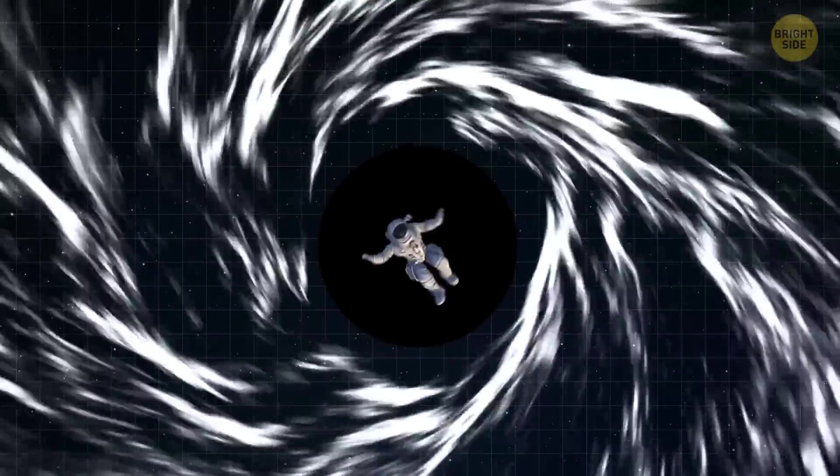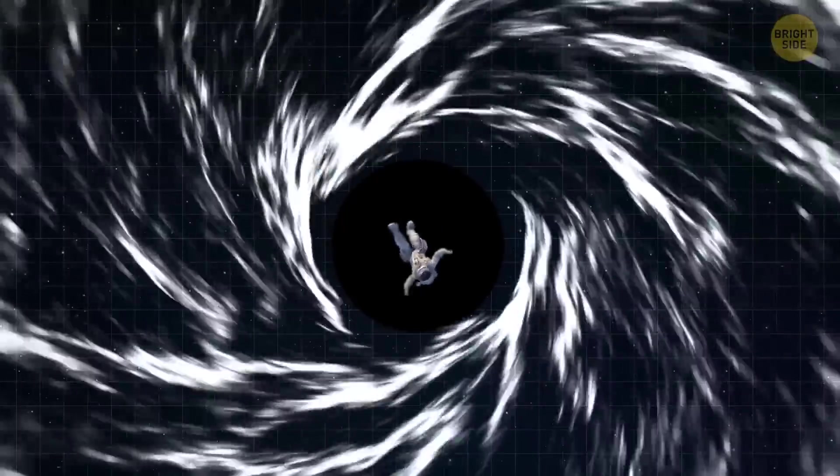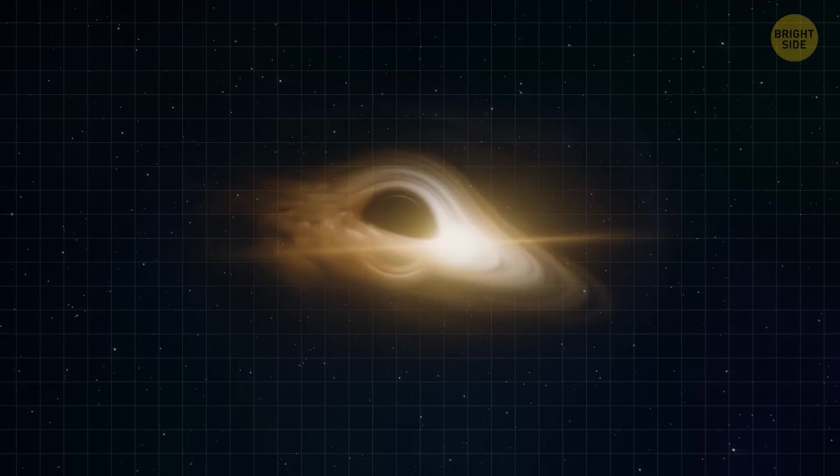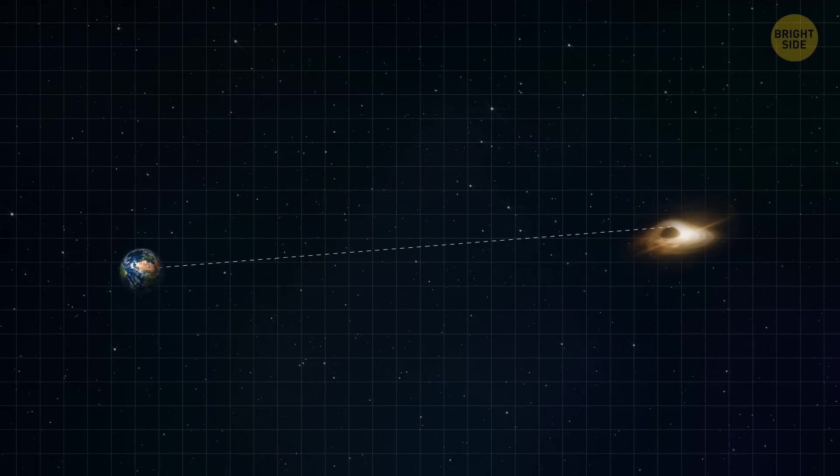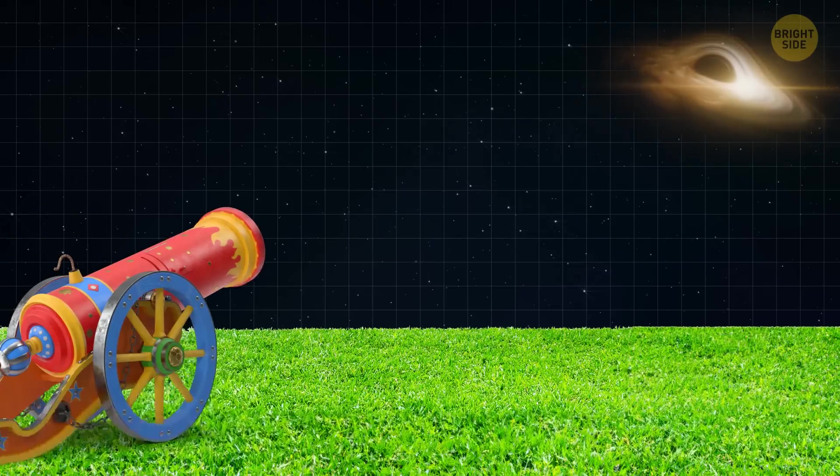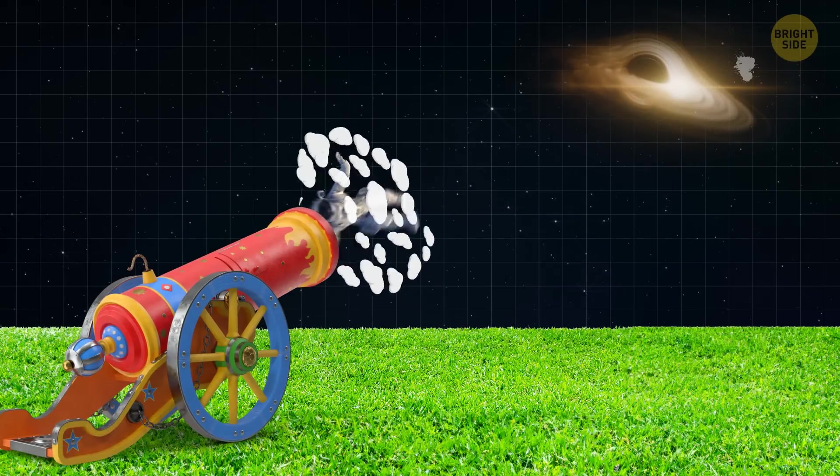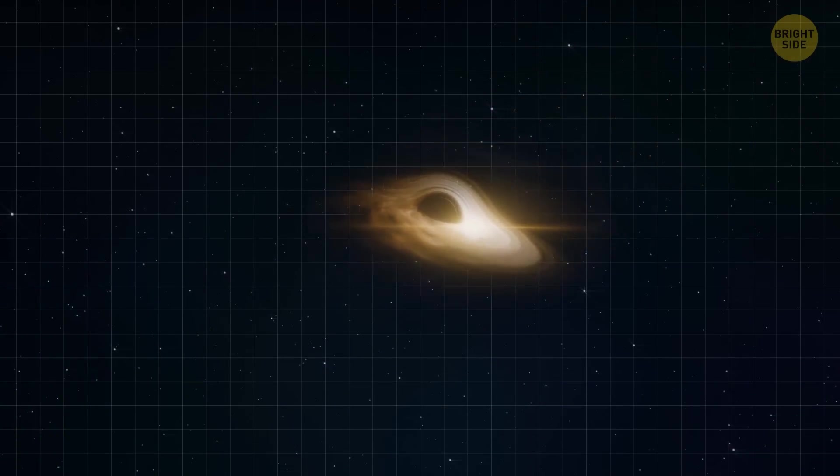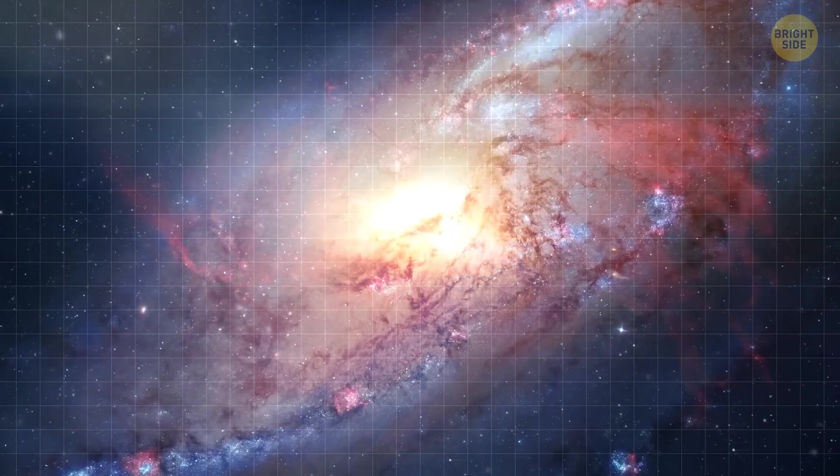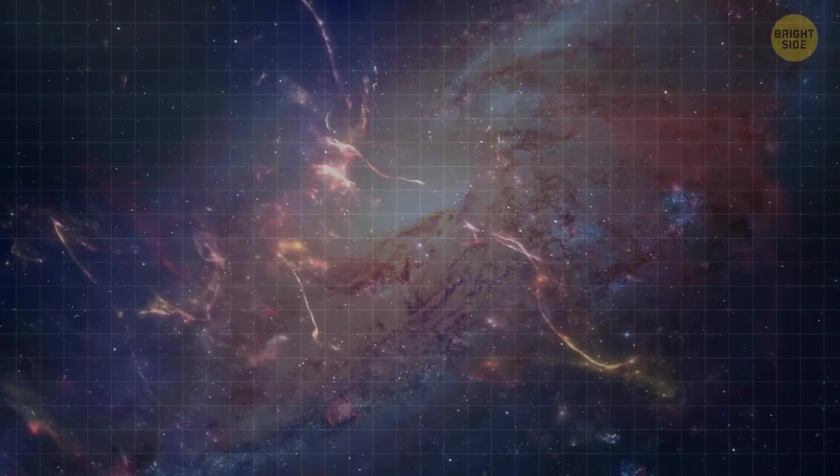Falling into a black hole is really, really tricky. First of all, to even have a chance of doing this, you would need to aim perfectly and start your journey from very far away. It's like trying to hit a tiny target from a long distance. That's because black holes exist within galaxies, which are filled with other objects like stars, planets, and gas clouds.